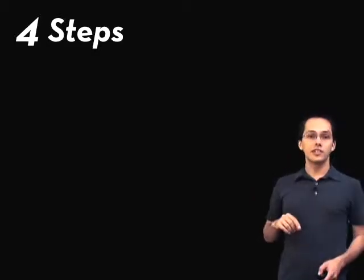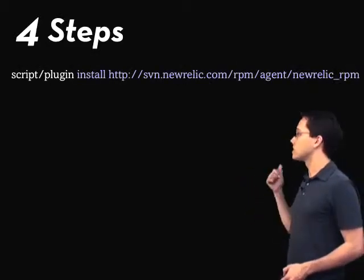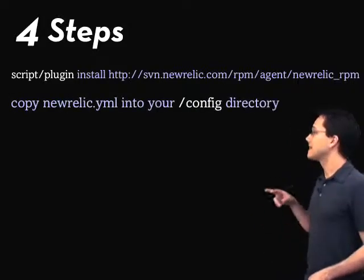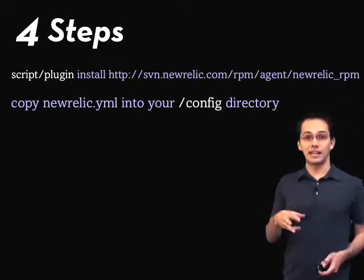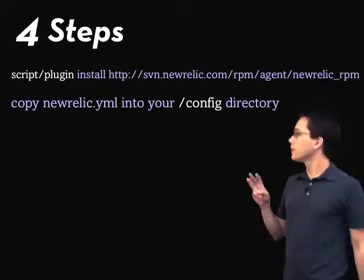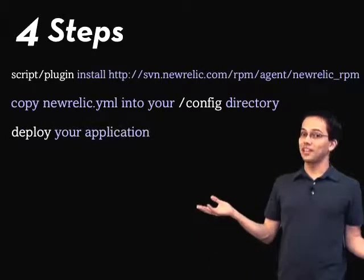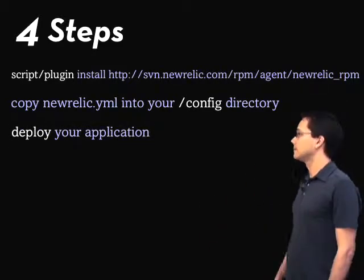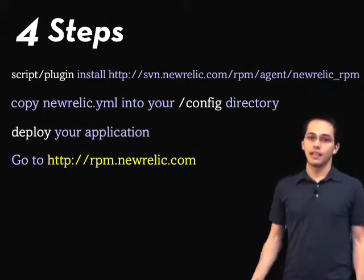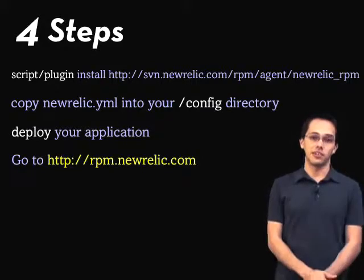It basically comes down to four easy steps. First step: install the New Relic plugin, just like so. Second step: take that config file they sent to you in that email and throw that into your config directory. Third step: deploy your application. Fourth step: go to their website, log in, and you've got access to data which will help you scale your Rails application.